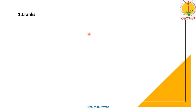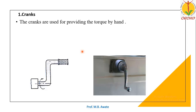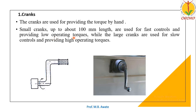The first one is a crank. This is a figure of a crank. Cranks are used for providing torque by hand. Generally small cranks up to about 100 mm length are used for fast controls, and they provide low operating torques.